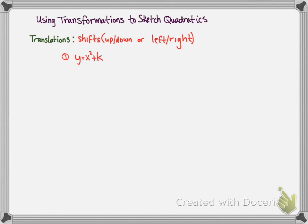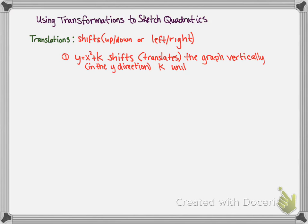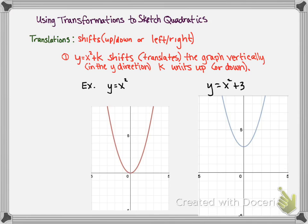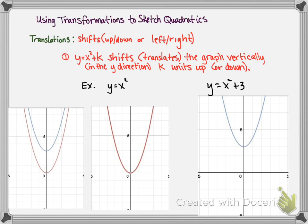If we take our parent function y equals x squared and add k to it, so we have y equals x squared plus k, this shifts or translates the graph vertically, or in the y direction, k units — up if it's positive, or down if it's negative. For example, y equals x squared is our parent function, and y equals x squared plus 3 is the parent function shifted up 3 units. On the same graph, it's easier to see this.